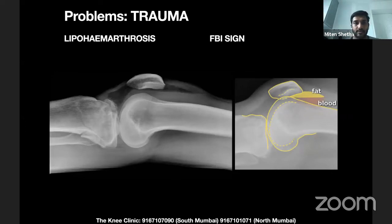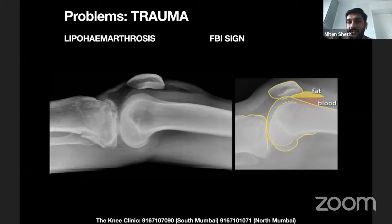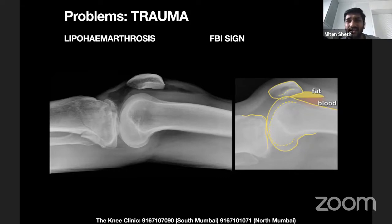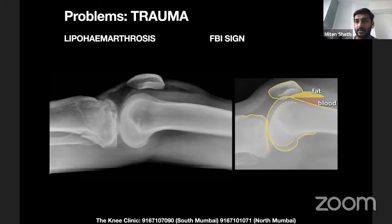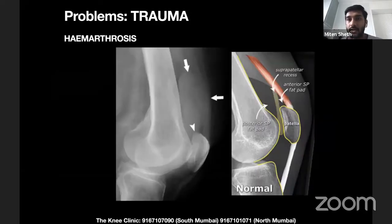In approximately 50% of cases involving a tibial plateau fracture, you'll see lipohemarthrosis. Some patients have violent injuries and fractures are directly visible on AP and lateral views. But in some patients there's only a hairline fracture. This subtle marker is called the FBI sign — the fat-blood interface. If you can see the fat-blood interface, it's not an ACL, PCL, or meniscal injury — something has broken. There is a bone injury, not just a soft tissue tear.